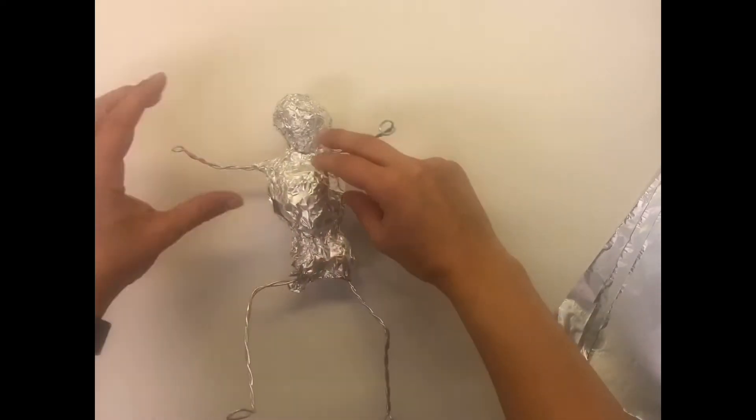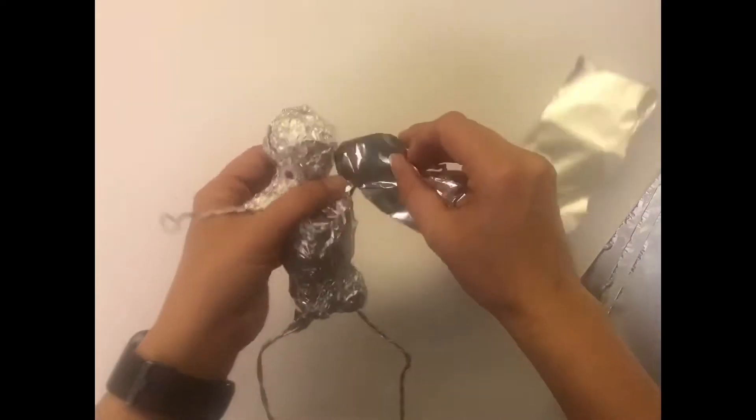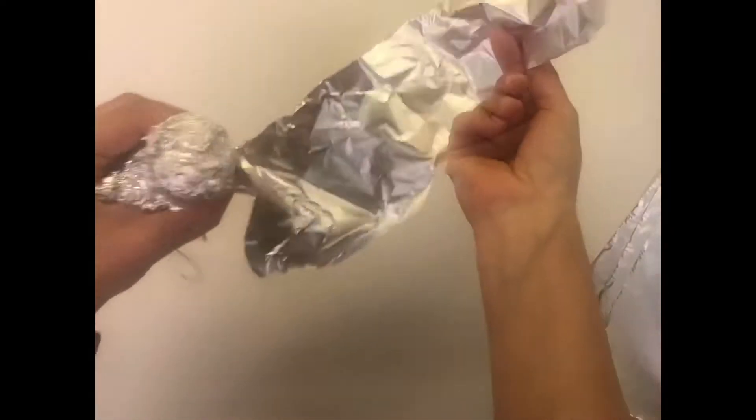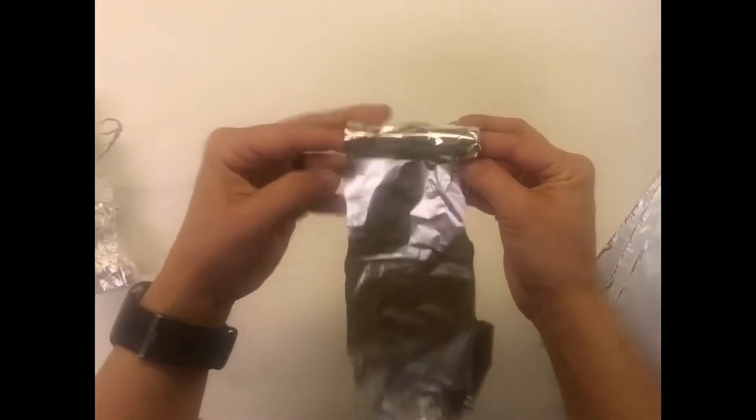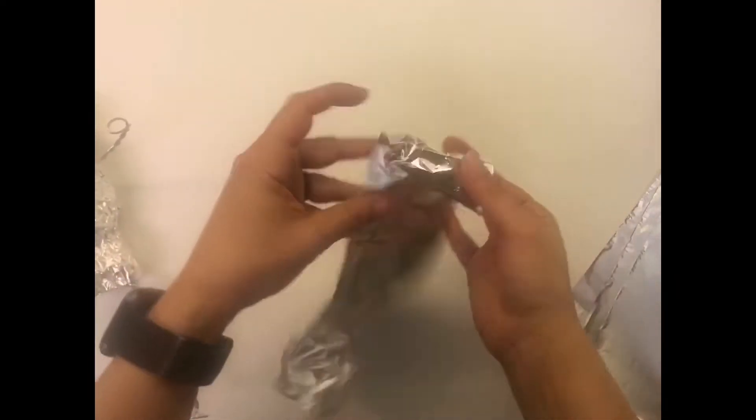Now the next step is I want to start working on my arms and my legs. One of the most common things is students will want to just wrap the foil around and around and around. But foil is thin just like paper. So that will just make a thin little skinny arm. So we want to repeat kind of our scrunching process.